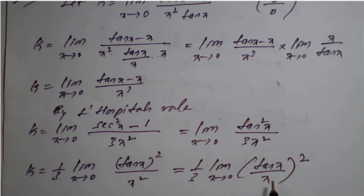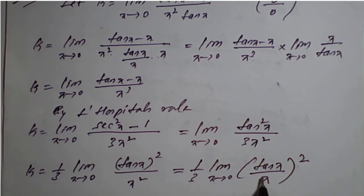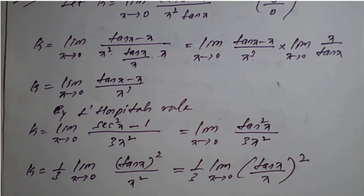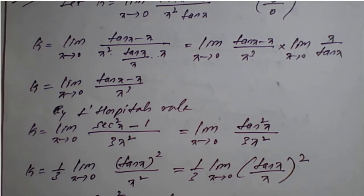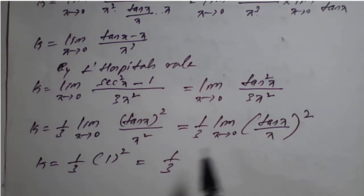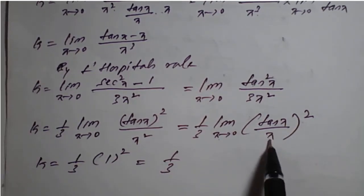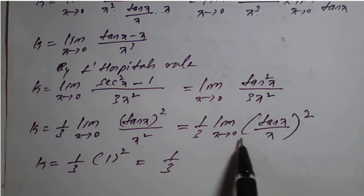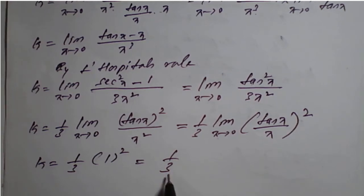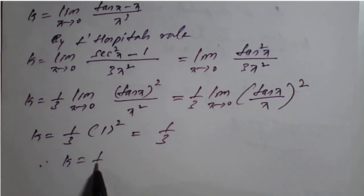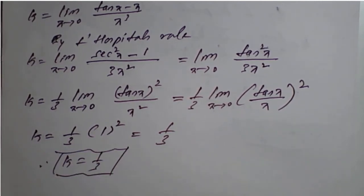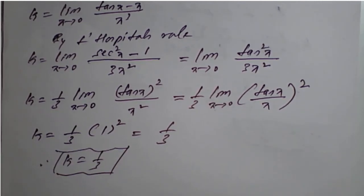As we know, the limit of tan x upon x as x tends to 0 is 1 by standard results. So k equals 1 by 3 into 1 squared, which is 1 by 3. Therefore k equals 1 upon 3. This is the required solution of the given problem.